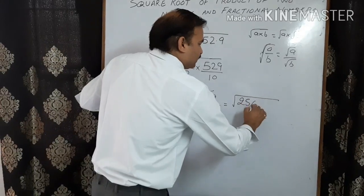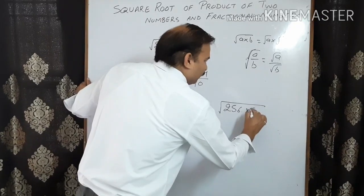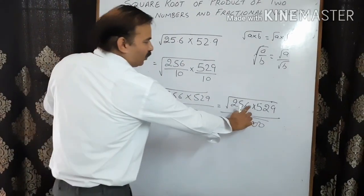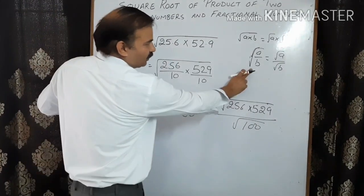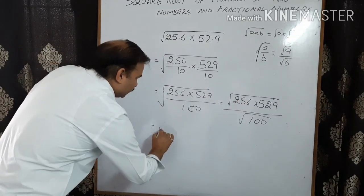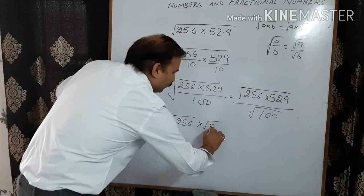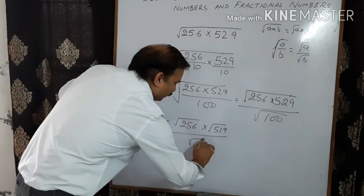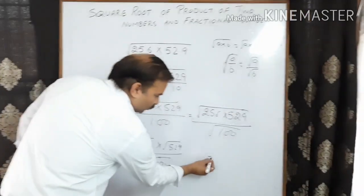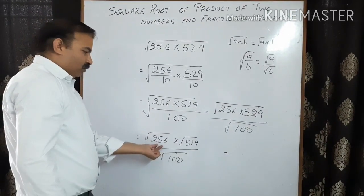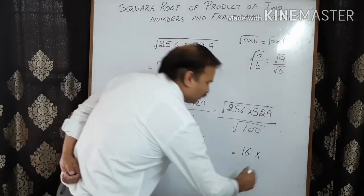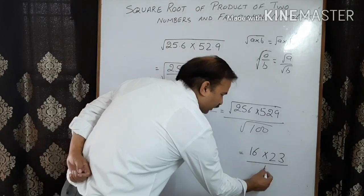So we can write this as square root of 256 multiplied by 529, all upon square root of 100. We have applied the rule that square root of a upon b equals square root of a upon square root of b. Now further separate them: square root of 256 multiplied by square root of 529, upon square root of 100. Find each square root separately — square root of 256 is 16, square root of 529 is 23, and square root of 100 is 10.